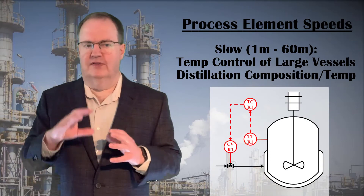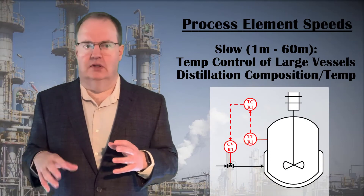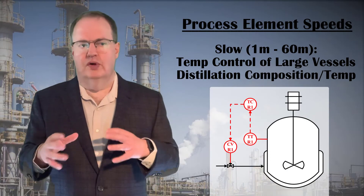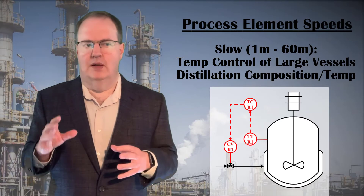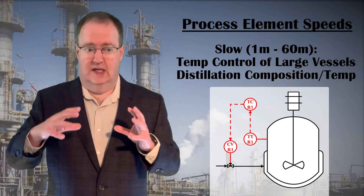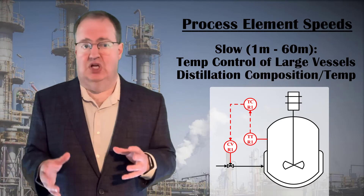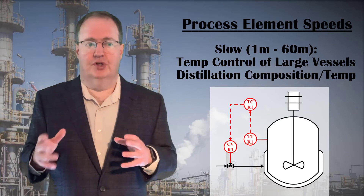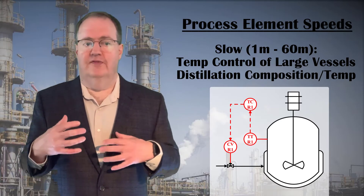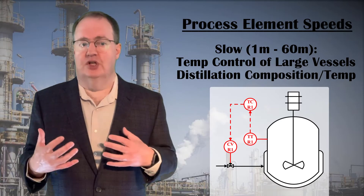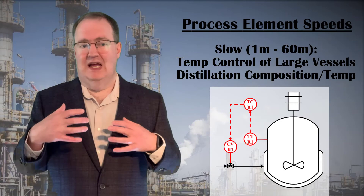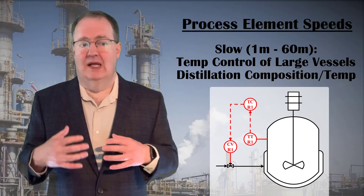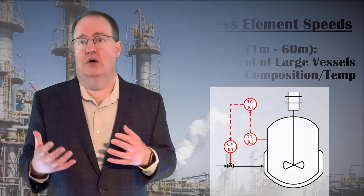Temperature control of a large vessel, like a stirred tank reactor, could have a dead time of one minute with a time constant of up to 10 minutes. Distillation column temperature control, from which we can infer composition, can have dead times of several minutes and time constants of up to an hour.